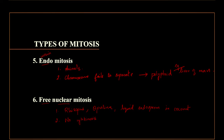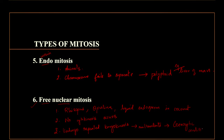Only karyokinesis happens in free nuclear mitosis. When the nucleus keeps on separating, it leads to a multinucleated condition. If there is a large number of nuclei, it is called multinucleated, and this condition is known as a coenocytic condition. This is all about types of mitosis.